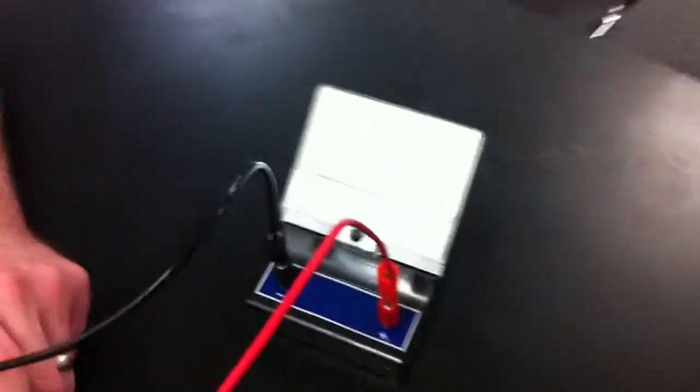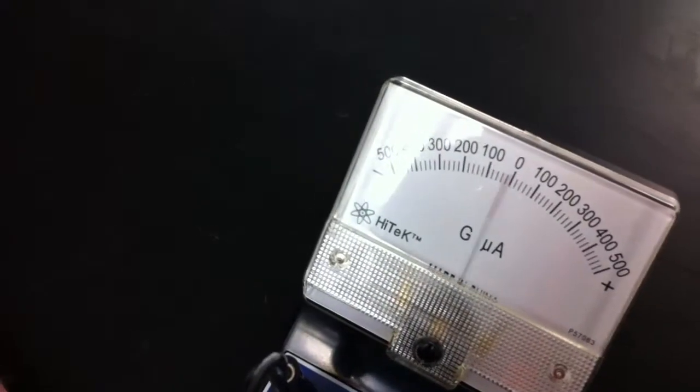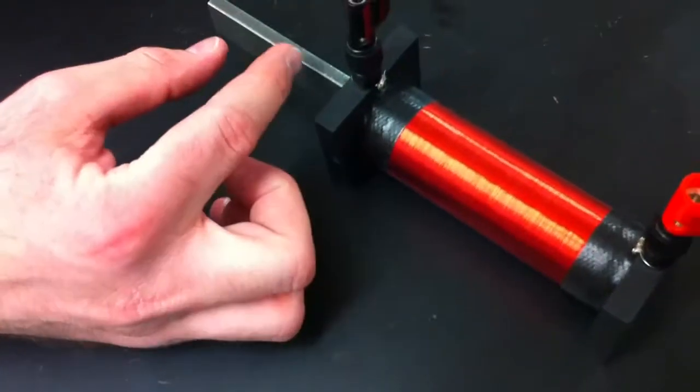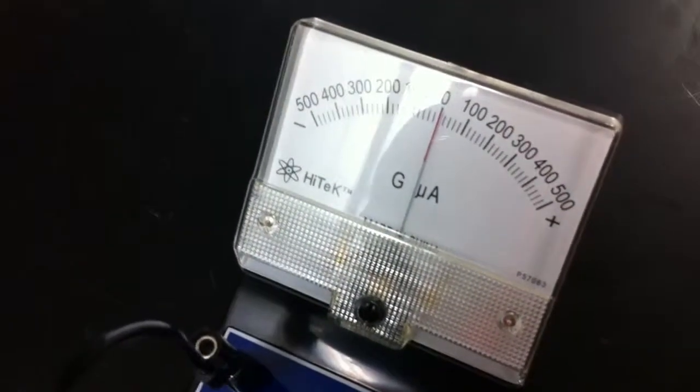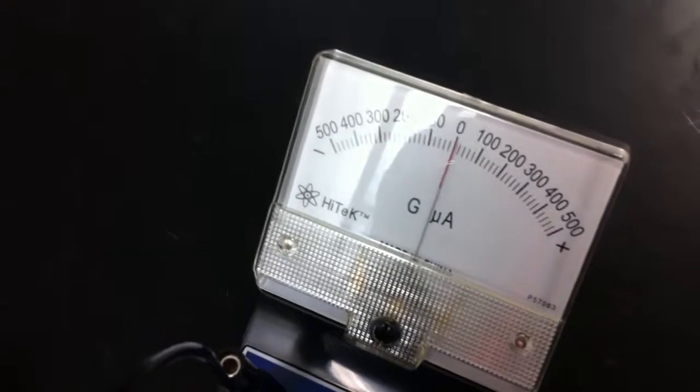We'll do it again because I was getting a glare. We'll go in with the north pole. Now the magnet is stationary. When the magnet is stationary, the magnetic field is not changing, so you get zero current produced in the red coil. When you pull the magnet out, it deflects the other way.